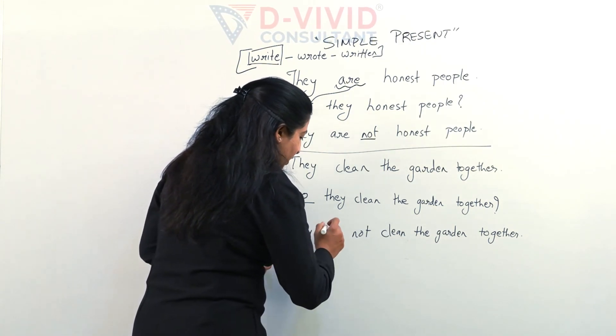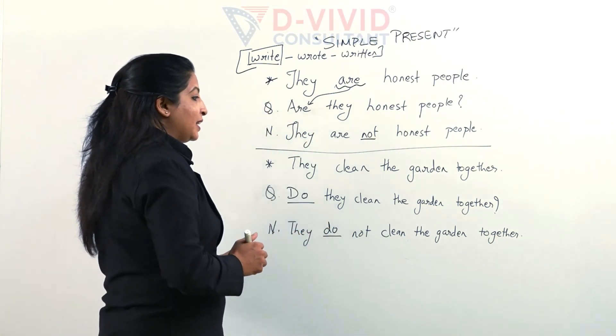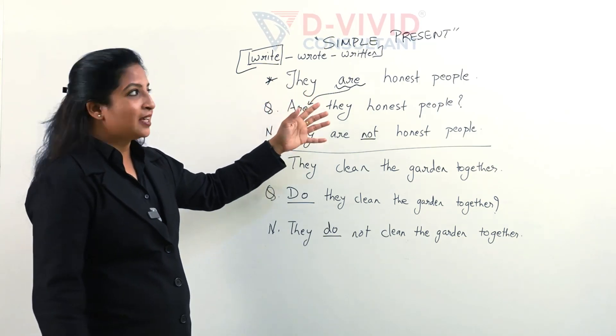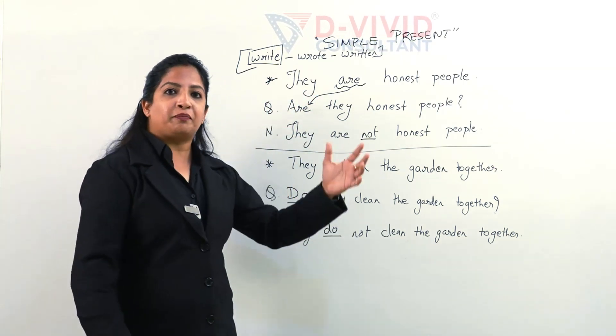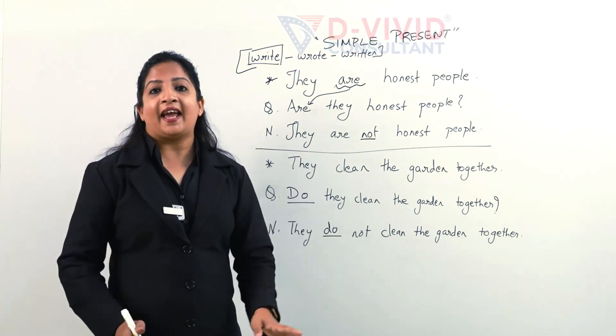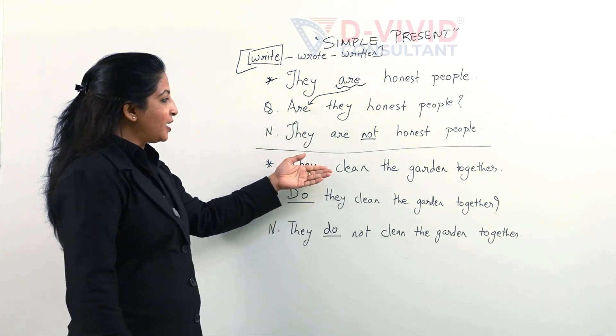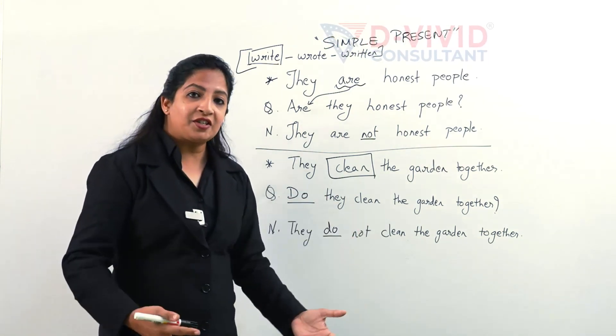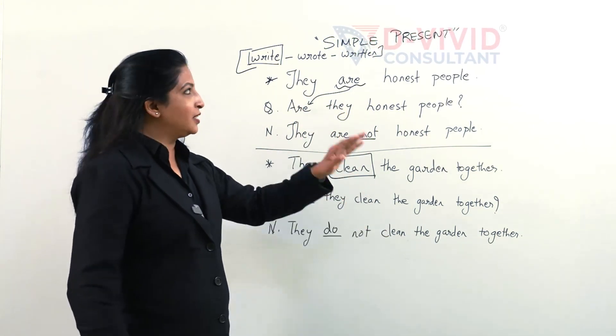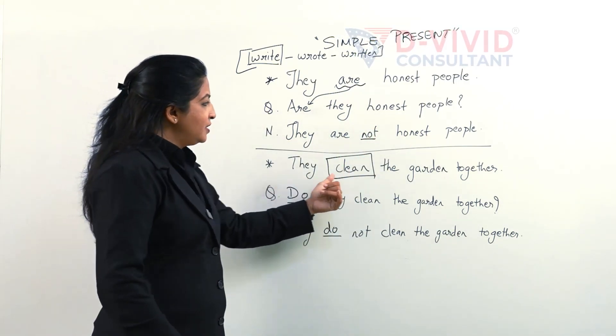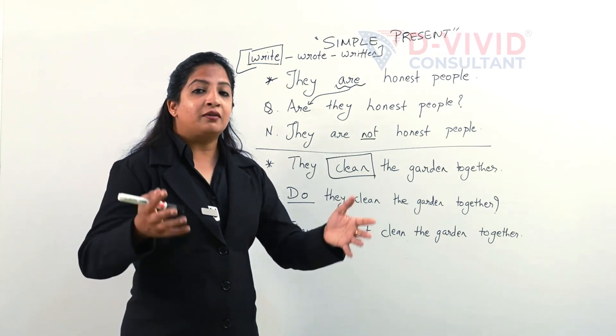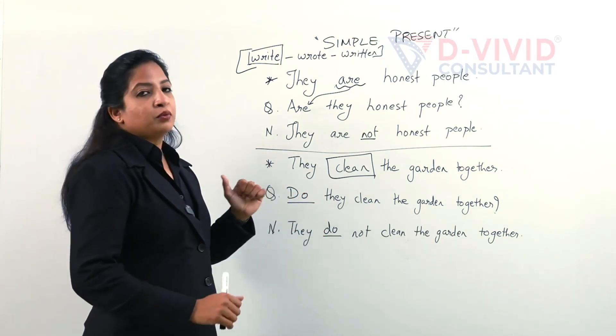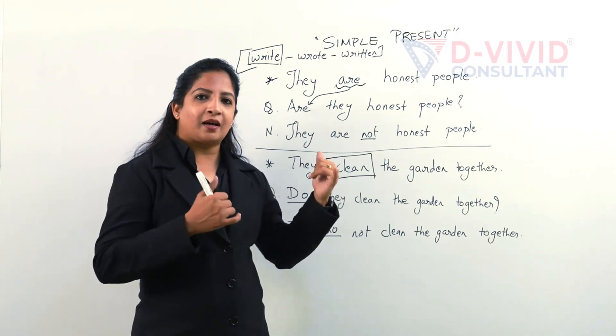Exactly. I'll write do they clean the garden together. And if I convert this into negative again I would need this do over here too. They do not clean the garden together. Now why is this? If you closely see the first sentence is talking about the quality of the people and not about their action. Whereas the second sentence is targeting the action, the activity.